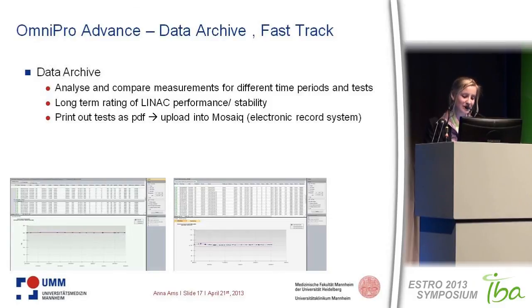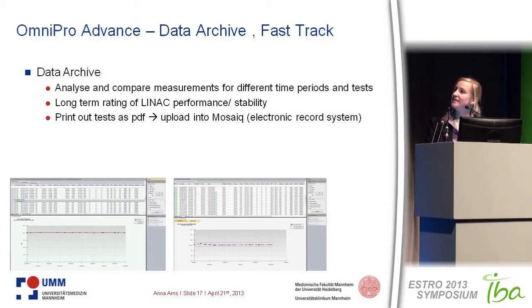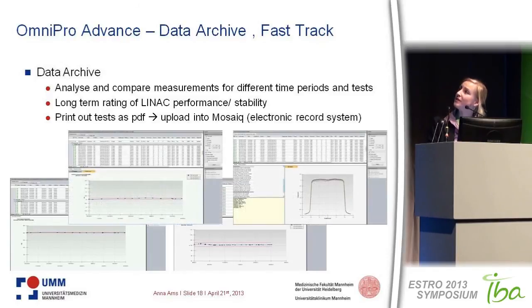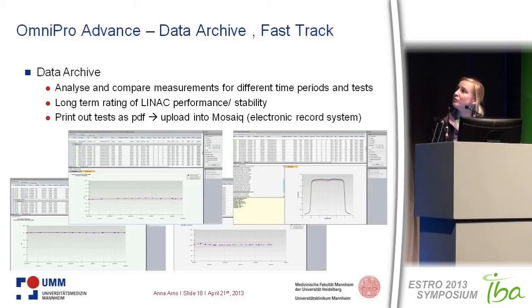At the bottom you can see two examples: the dose output, which is quite stable over the last three months, and the symmetry plot, where the red bars are the tolerances and the blue bars are your daily results. Another example is the inline profile, where we once had a failure in field size that was just on the border of tolerance. You can also overlay all profiles from previous measurements to compare stability visually.